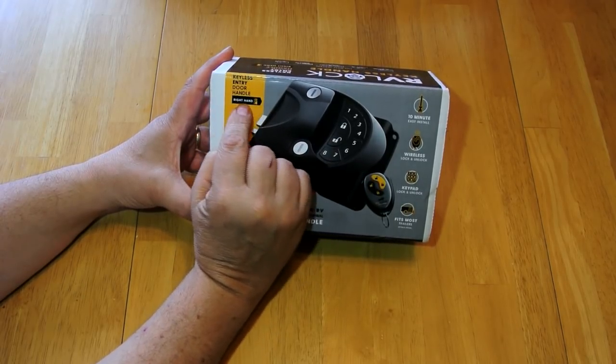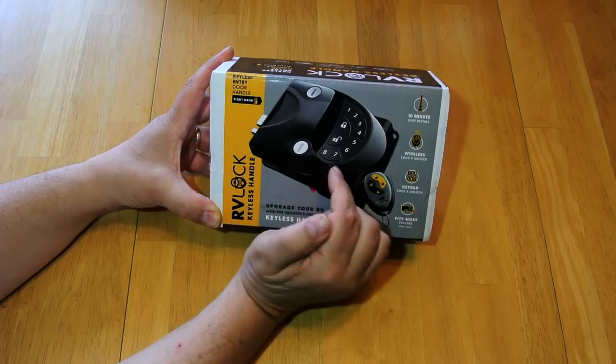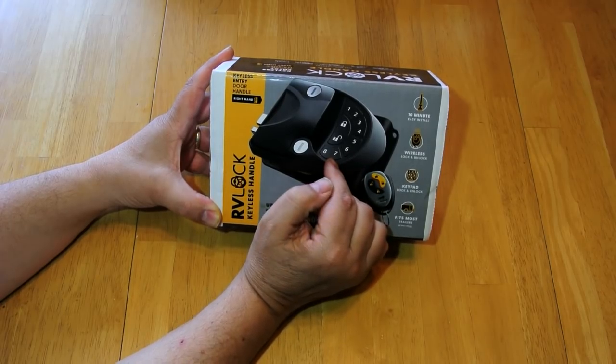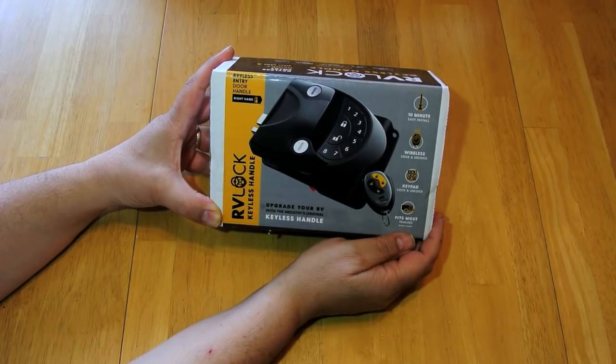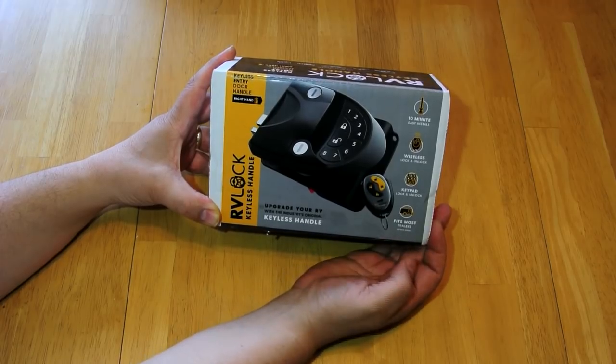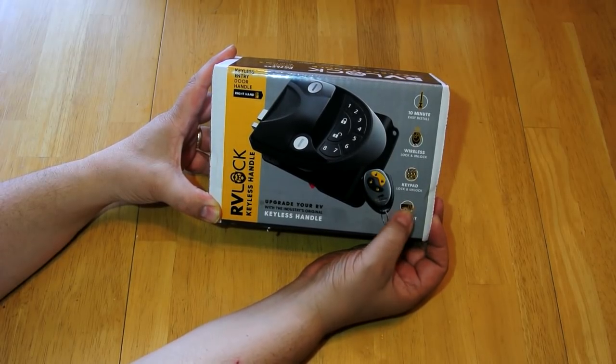This is the right hand version. They also make a left hand version. This is version 4.0 and you can still buy version 3.0 from the manufacturer. It specifies that it fits most trailers.